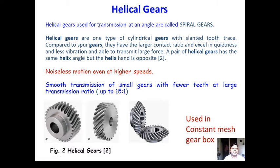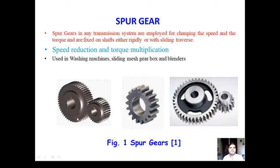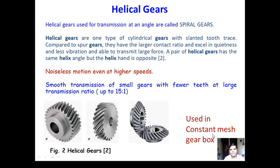A pair of helical gears has the same helix angle but the helix hand is opposite to each other. Based on their constructional details and profile, they are used in constant mesh type gearboxes in automobiles, which are quite popular in cars and other transportation means. In the sliding mesh gearbox using spur gears, one gear is fixed and another is slid on its axis using a splined shaft to engage with the second part, which may create noise while meshing.